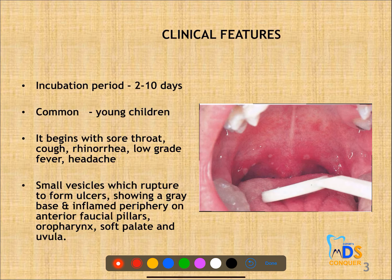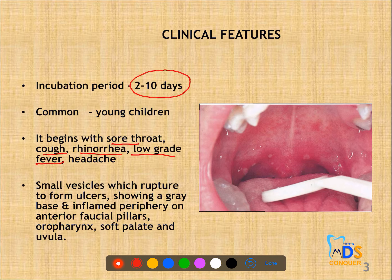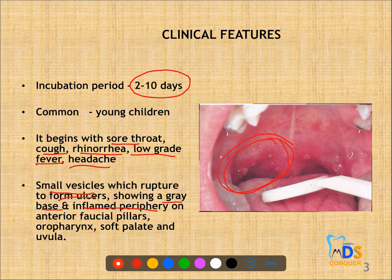Clinical features include an incubation period of 2 to 10 days. It mostly begins with a sore throat, cough and rhinorrhea. There will be low grade fever and headache, and then there is formation of small vesicles which rupture and form ulcers. These ulcers show a grey base and an inflamed periphery on the anterior faucial pillars. You can see in the picture the ulcers on the anterior faucial pillars, and it can also involve the oropharynx, soft palate and uvula.